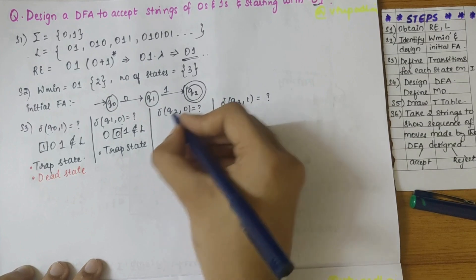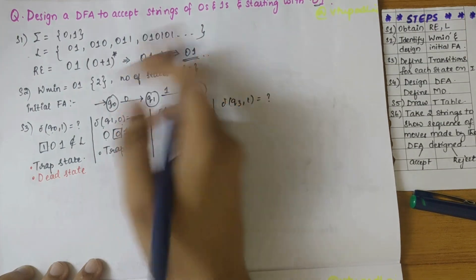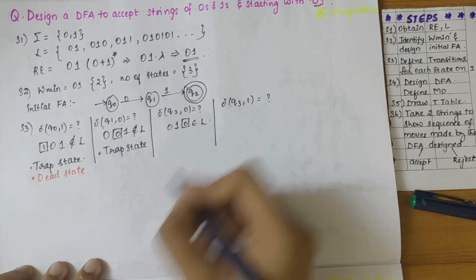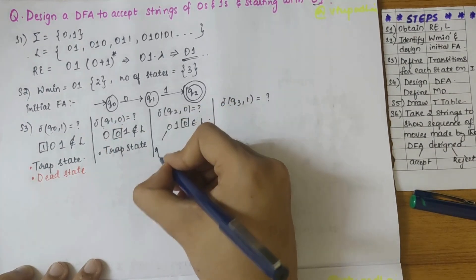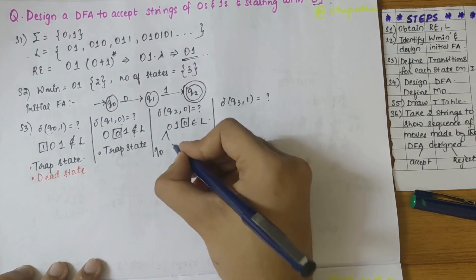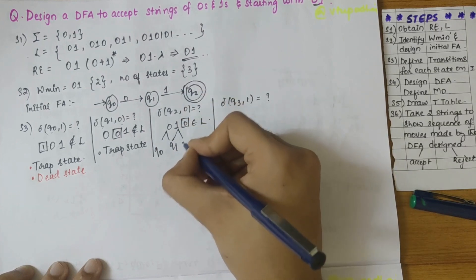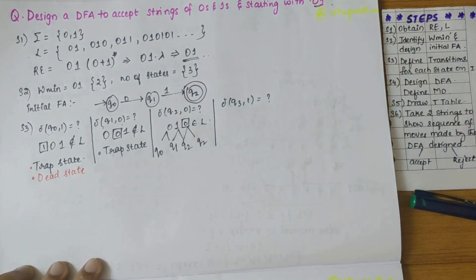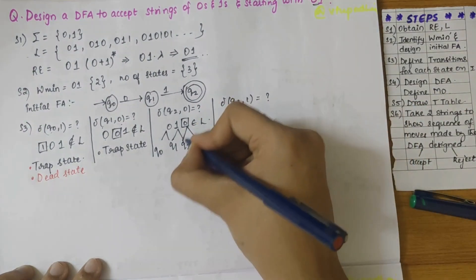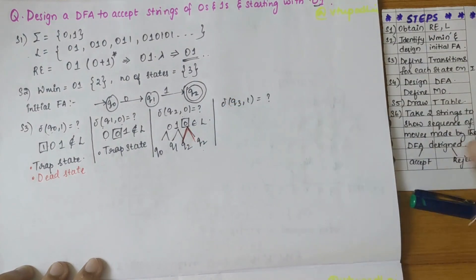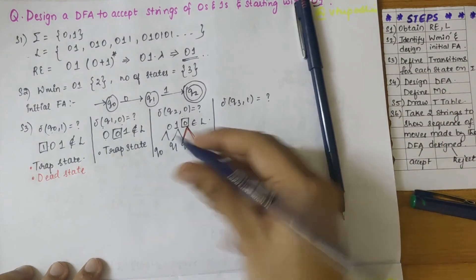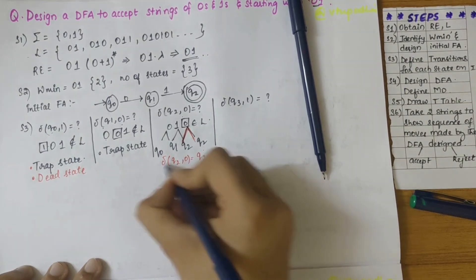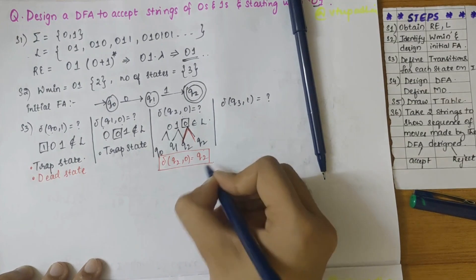Next, q2 on 0: before that we have zero and one — is it starting with zero-one? Yes, it belongs to L. Let's trace: q0 on 0 gives q1, q1 on 1 gives q2, and q2 on 0 is unknown, but it has to always end with q2. Thus the only possible transition is q2 on 0 should give q2 itself.